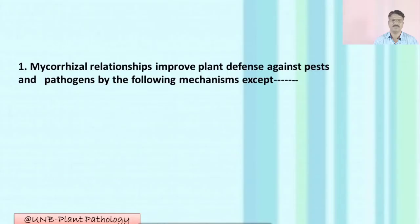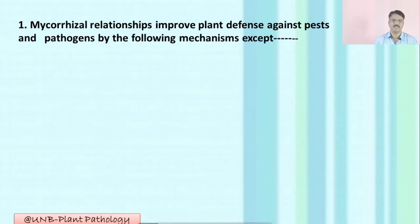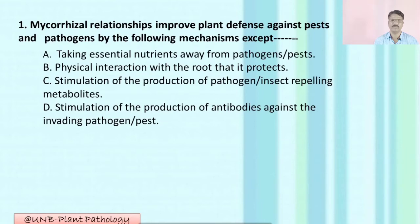Question number one: Mycorrhizal relationship improves plant defense against pests and pathogens by the following mechanisms, except — option A: taking essential nutrients away from pathogens and pests; B: physical interaction with the root that protects; C: stimulation of production of pathogen and insect-repelling metabolites; D: stimulation of production of antibiotics against invading pathogens. The correct answer is A: taking essential nutrients away from pathogens and pests.